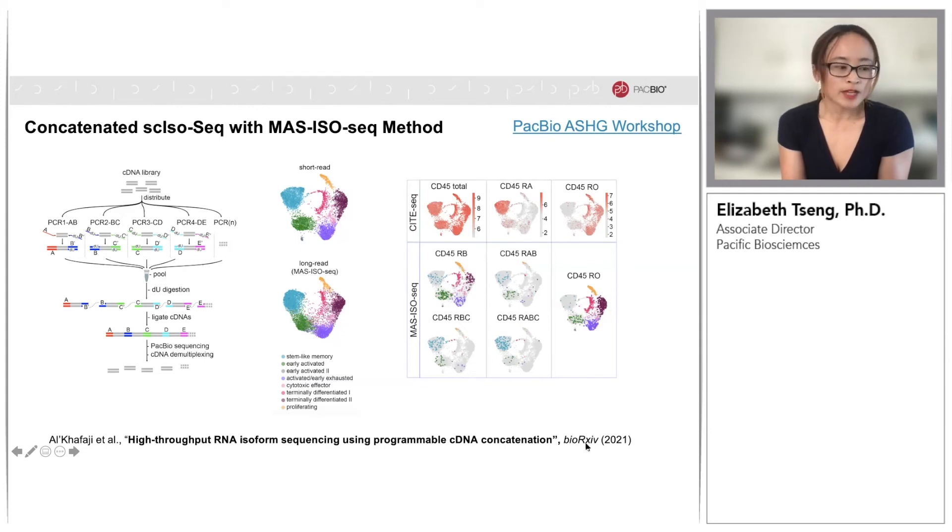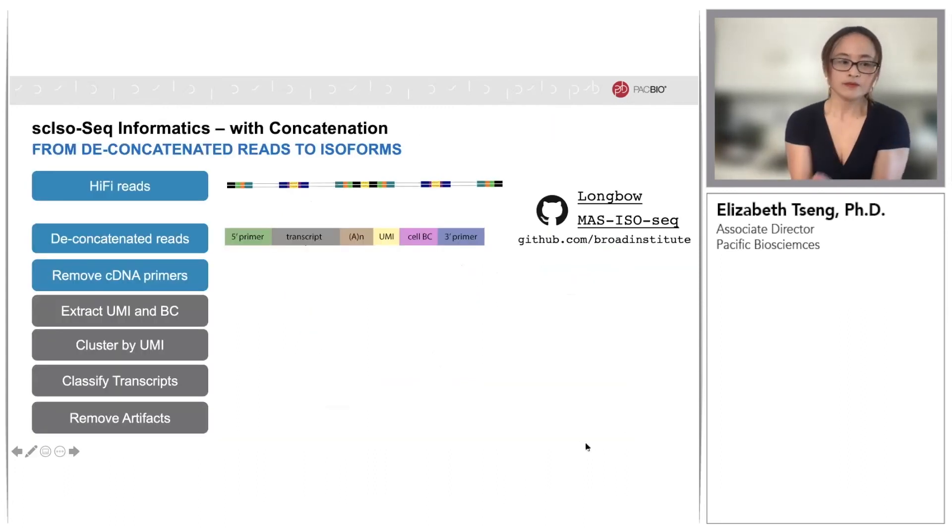Furthermore, the full-length information captured differential isoform usage of CD45 isoforms that were not detectable either using short reads or CITE-seq. So how does the addition of concatenation change the bioinformatics workflow I've shown earlier? Very little, in fact. If we look at this chart, all we are adding is a layer of deconcatenation so that we may begin the rest of our informatics workflow with reads that look like if they had not been concatenated.